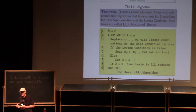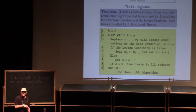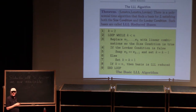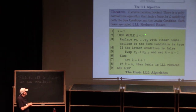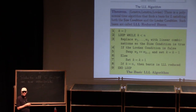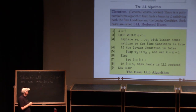Here's the algorithm briefly. We start with k=2 — that's how many vectors we're currently looking at, starting with v1 and v2. We keep looping while k is less than the dimension n. k goes to k+1 and after n iterations k equals the dimension and we have a whole basis — but there's a catch.